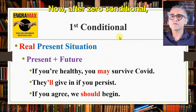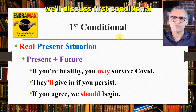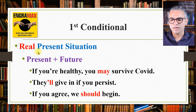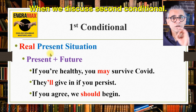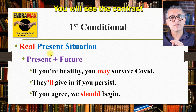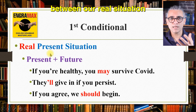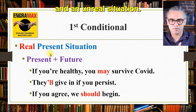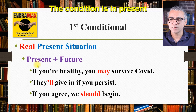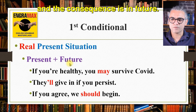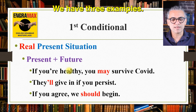Now, after zero conditional, we'll discuss first conditional. First conditional describes a real present situation. When we discuss second conditional, you will see the contrast between a real situation and an unreal situation. So what is the form? The condition is in present and the consequence is in future.